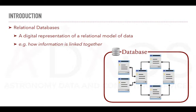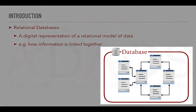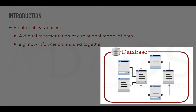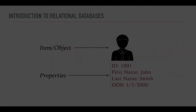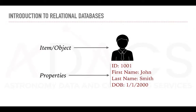A relational database is a digital representation of a relational model of data. In other words, a database expresses how information is linked together. A typical database stores the organized data into tables, containing rows and columns similar to a spreadsheet. In a database, we want to keep track of information relative to items or objects and their relative properties. An item can be as varied as people, products, astronomical phenomena, and so on.